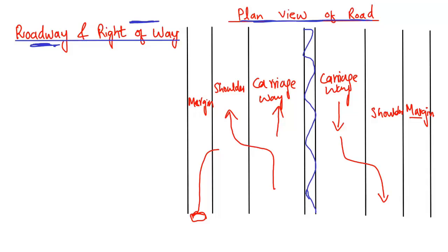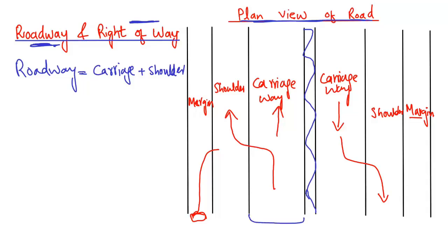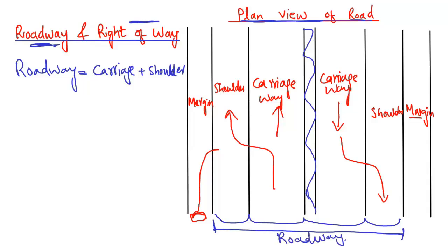Now, how can we differentiate between roadway and right of way? The roadway consists of two elements: carriageway plus shoulder. So both carriageways and both shoulders together form this whole distance known as the roadway. If someone asks what the roadway is, it is basically the combination of the shoulder and the carriageway.